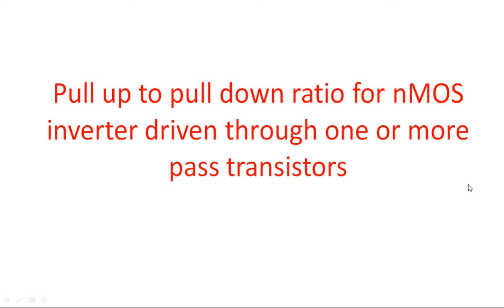In this video I am going to explain the derivation of the pull-up to pull-down ratio for an NMOS inverter driven through one or more pass transistors. In the previous video I explained the calculation for an NMOS inverter driven through another NMOS inverter. Generally, the NMOS inverter has a minimum pull-up to pull-down ratio of 4:1. Below that value, the characteristics of the NMOS inverter do not meet the required values, causing problems in large circuitry.